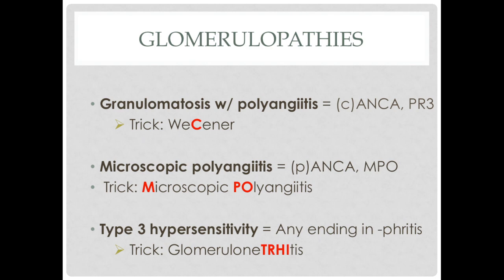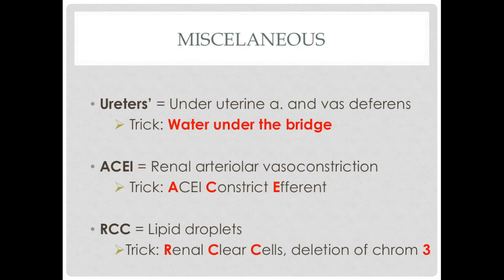A good trick for glomerulopathies is that everything ending in '-itis' is going to be a type 3 hypersensitivity, so I like to think of it as 'glomerulone-three-itis.' An example of type 2 hypersensitivity would be Goodpasture syndrome. A good way to remember the location of the ureters — which is under the uterine artery in females and under the vas deferens in males — is to remember that water goes under the bridge.